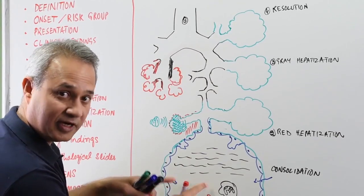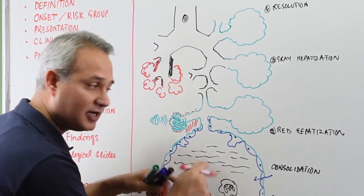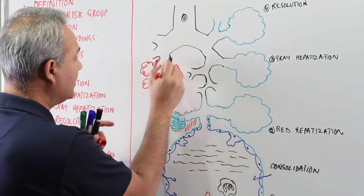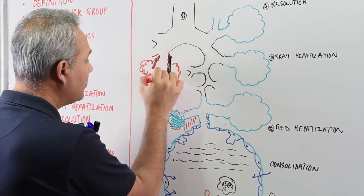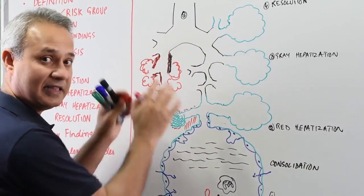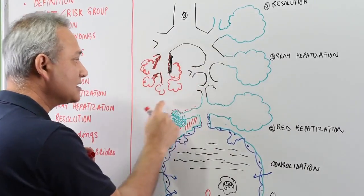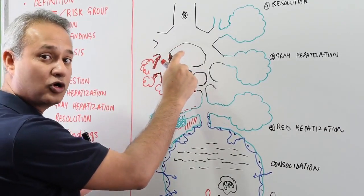It did not start from the alveoli. Here the damage is starting from the alveoli and spreading out. Here the damage or the infection starts at the walls of the bronchi and then moves out. This is called bronchopneumonia.